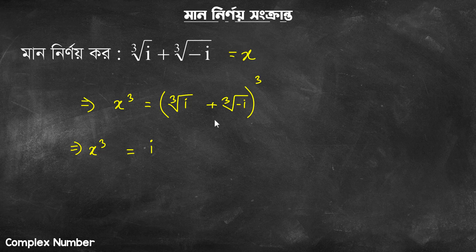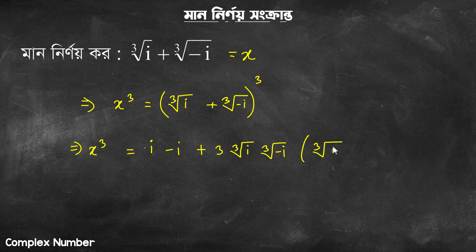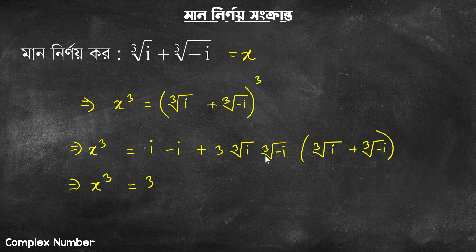A cube is the cube root of i, and b cube is the cube root of negative i. Then plus 3ab, where a is the cube root of i and b is the cube root of negative i, into (a plus b), which is x. I will combine the cube root.